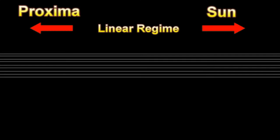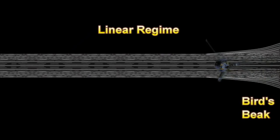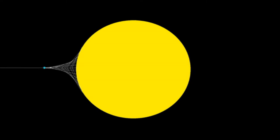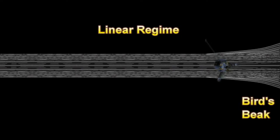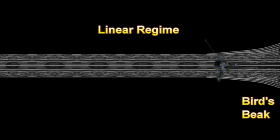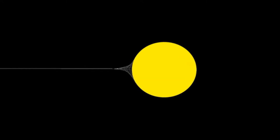If all atoms are physically interconnected across the universe, what we have is a bird's beak that comes out of the sun, and all those ropes that interconnect every atom in the universe connect us to the Alpha Centauri system. You see the bird's beak right there close to the sun, and in between you have this linear regime. A lot of people say, well, shouldn't it be faster because the sun is pulling?